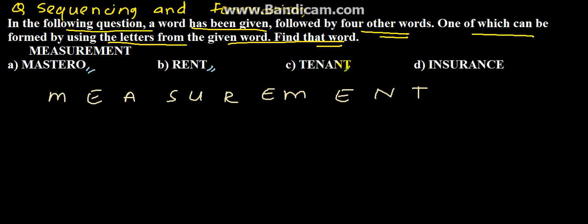rent, tenant and insurance. So if you see maestro M E S T E R O, O is missing. So maestro cannot be formed.